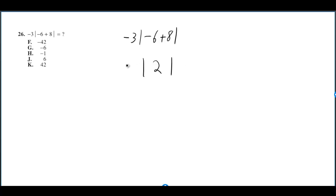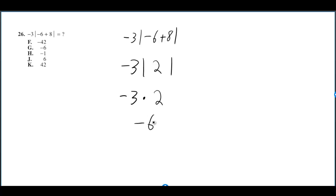I still have my negative 3 on the outside. The absolute value of 2 is just 2, and then I still have my negative 3 being multiplied by the 2. And 2 times negative 3 is negative 6.